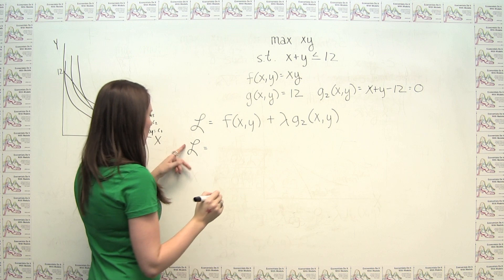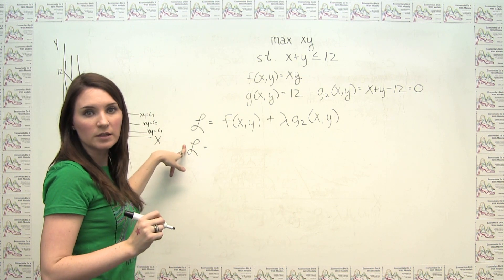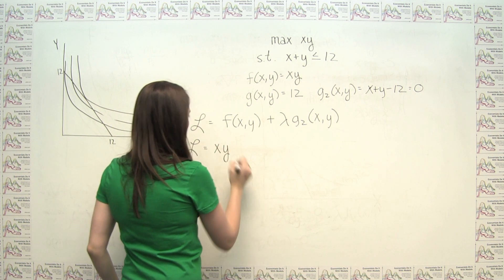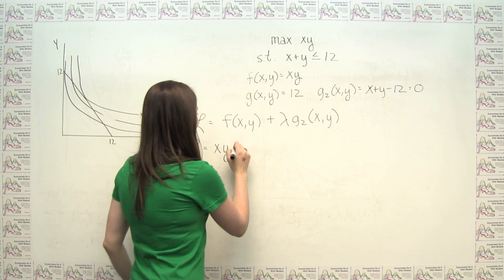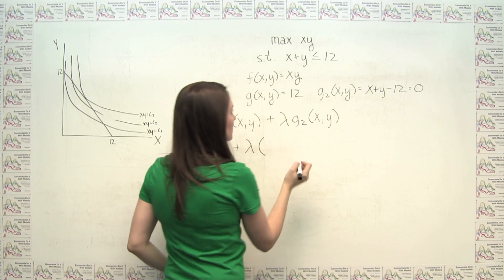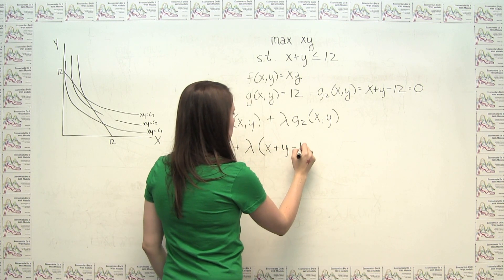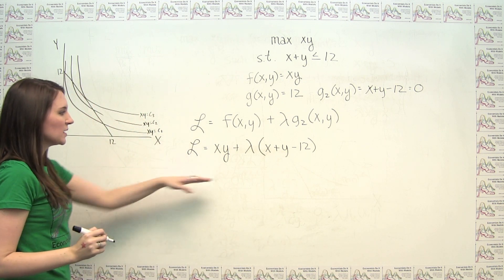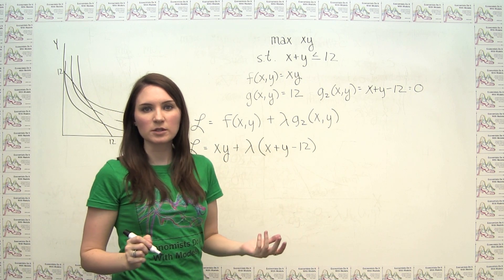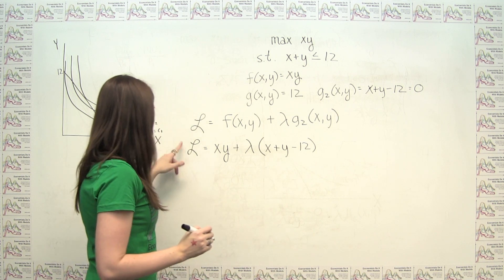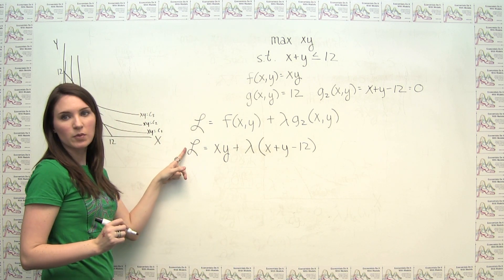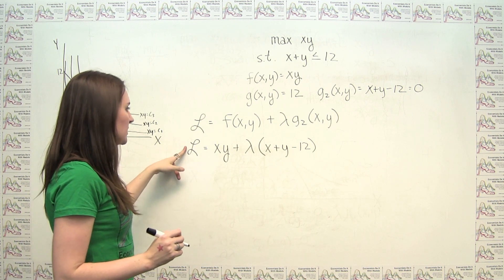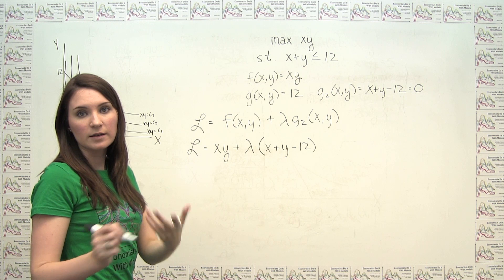In our particular example then, our script L here, our Lagrangian, is just f of xy, which is x times y plus lambda times x plus y minus 12. And we said what we want to do in order to solve the original constrained optimization problem is to find the extreme points of this L here, which we do by taking the derivative of it and setting it equal to zero.